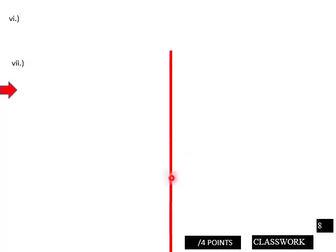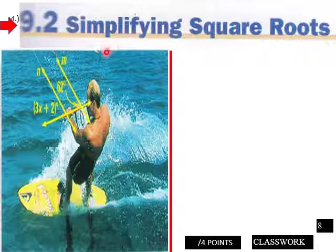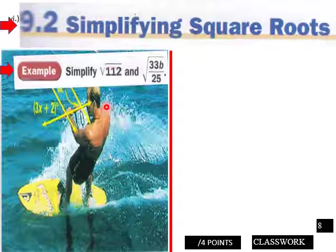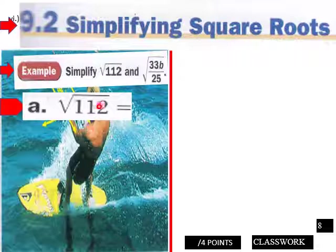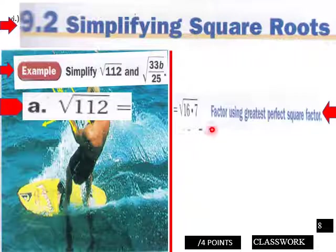On to our next example here, simplifying the square root of 112 and then the square root of 33b over 25. So for a here, which is the square root of 112, how would we come to that? So we could break this down into 16 times 7. 16 would be your largest factor that would be a perfect square of 112. So we factor using the greatest perfect square factor, which would be 16 times 7.